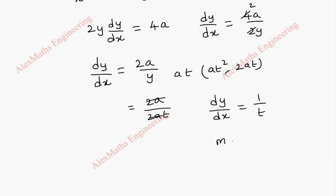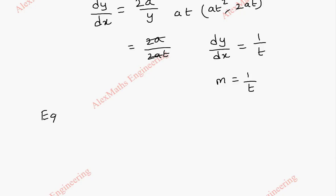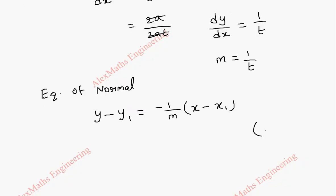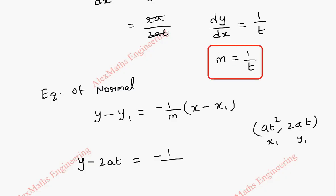This is our slope m, so m = 1/t. Now we write the equation of the normal using the formula y − y₁ = (−1/m)(x − x₁). Our point (x₁, y₁) is (at², 2at). Substituting, we get y − 2at = −t · (x − at²).